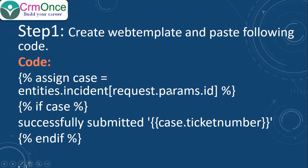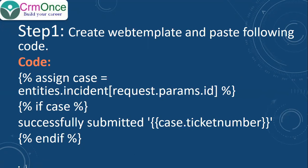Here, 'request' refers to the URL query string parameter where I am passing the current record ID. If you pass that current record ID, you will get the ID of the record that was just submitted. Then I'm checking the null condition — if that object is not equal to null, I'm showing 'successfully submitted' along with 'case.ticket_number' as the reference number. The out-of-box case number field is the ticket number. I print it here and close with 'endif'. This simple code you can copy-paste into the web template.